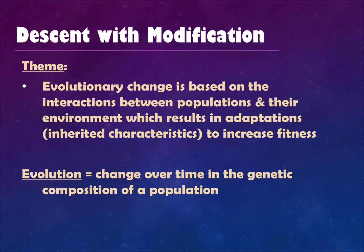One of the other ways scientists describe evolution is the term 'descent with modification.' Descent meaning one after the other, with modifications in the form of changes to traits and adaptations. Evolutionary change is based on the interactions between populations and their environment — that is one of the key features of natural selection.